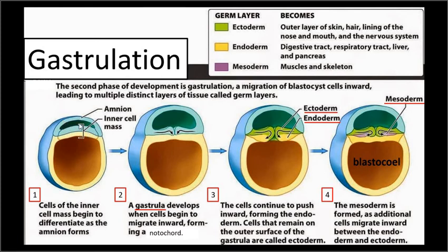What ends up happening is the epiblast starts folding in. This is what's called a notochord — if you looked at a photograph of this you would see a line. That notochord is what is going to eventually become part of the spinal cord. It folds in even more. By this point, if you look at the final image, it's folded over like a taco shell shape. You now have the ectoderm, which is the outer part; the endoderm, which is the inner part; and the mesoderm, which is the part in the middle.